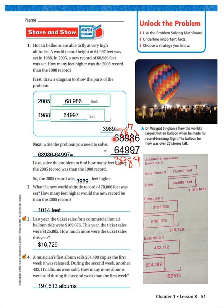What if a new world altitude record of 70,000 feet was set? How many feet higher would the new world record be than 2005? The new record was 70,000 feet; in 2005 it was 68,989 feet. I subtracted the two and got 1,014 feet. I put the new record, subtract from 2005, and get 1,014. I didn't show all the work here because I don't have room, but I expect to see this from you.